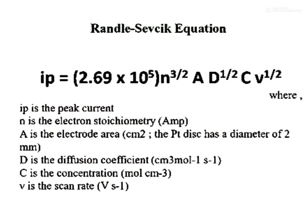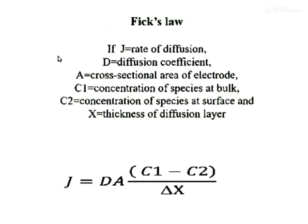The Randles–Ševčík equation is important to determine whether a redox reaction is reversible or irreversible. To use it, we need to plot a graph of peak current versus scan rate. If you get a straight line, then we can say that the process is reversible.